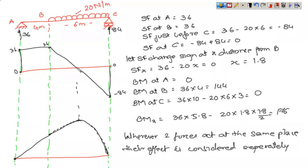The shear force changes sign somewhere between B and C. Setting SF equal to 0 at a distance X from B: 36 minus 20 into X equals 0, giving X equal to 1.8 meters. So the shear force diagram changes sign at 1.8 meters from B, which is also where the maximum bending moment will occur.